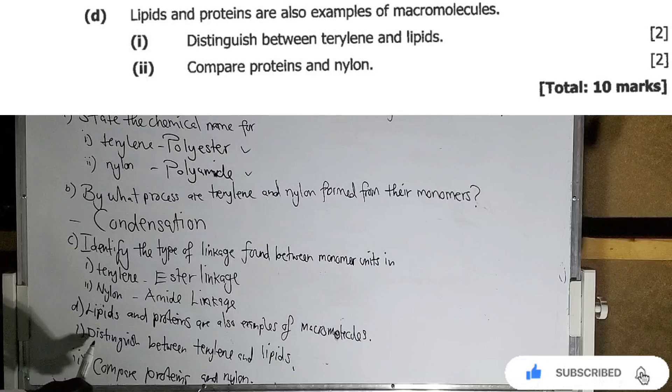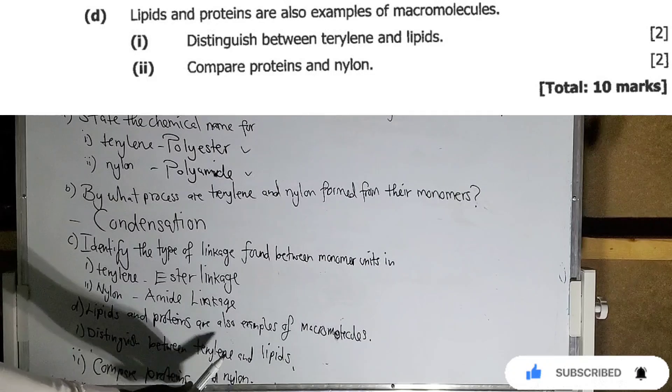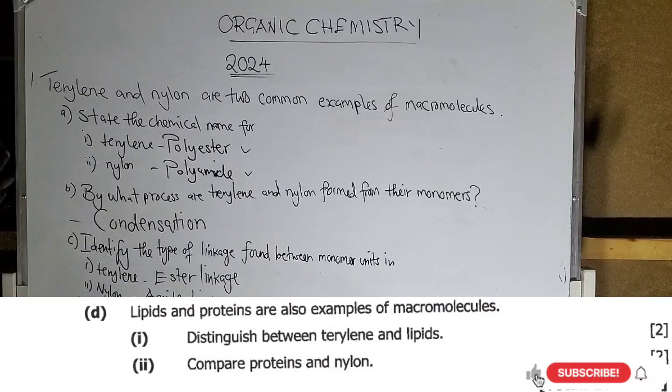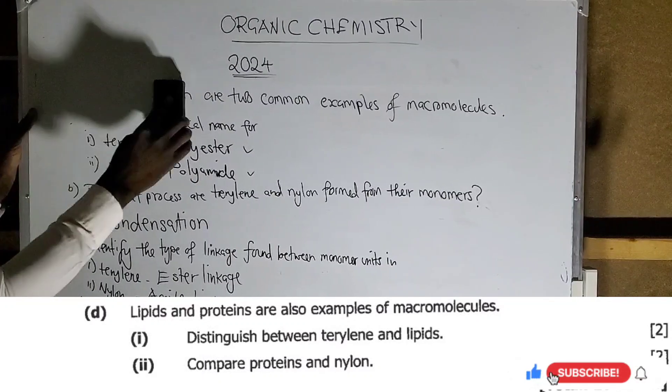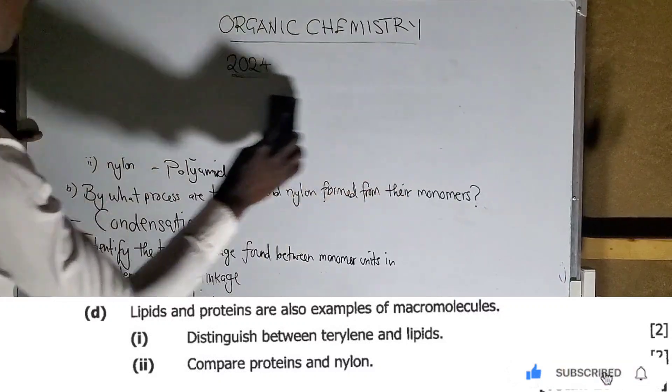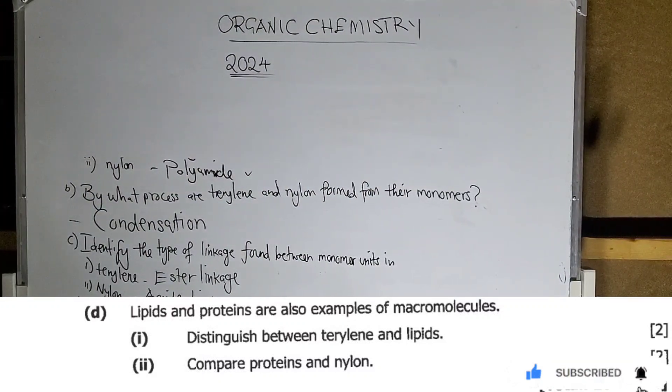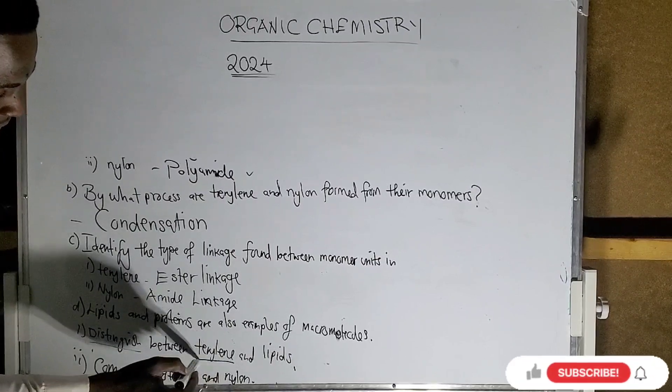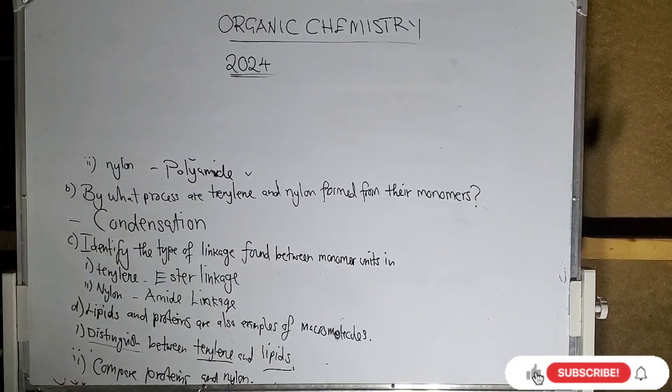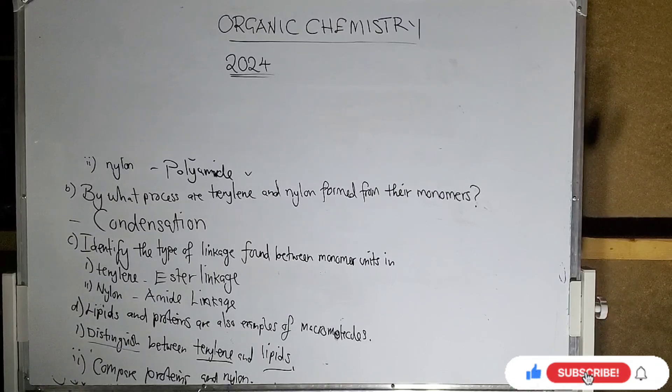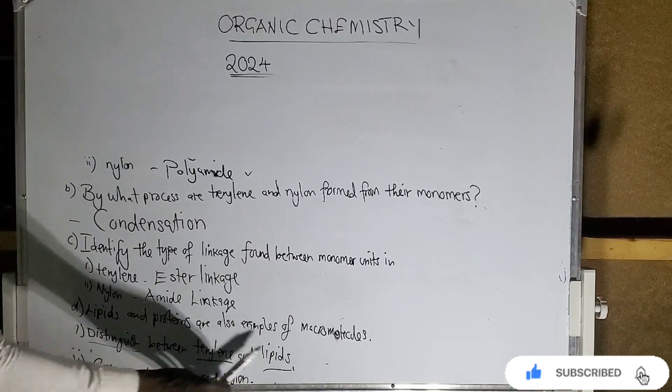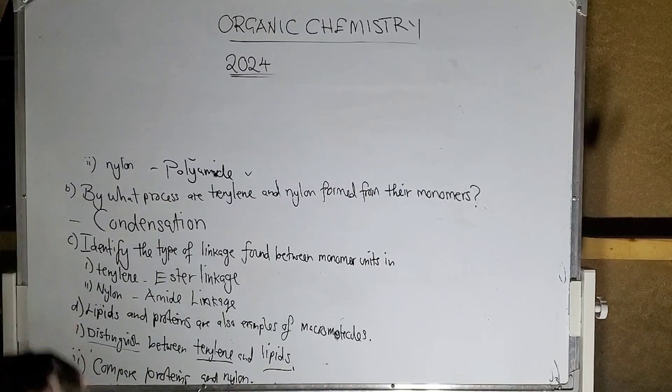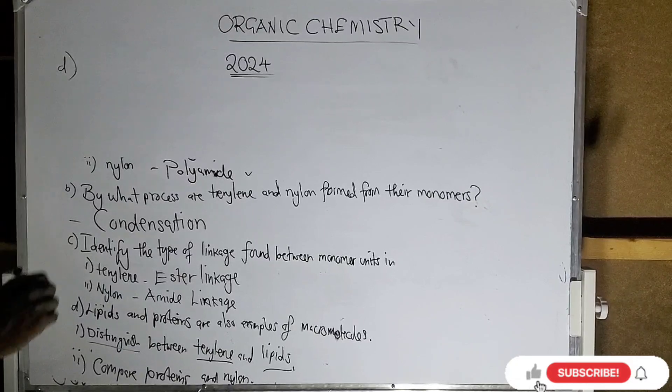Now, the first question is saying distinguish between terylene and lipids. Let me just erase this and explain. I want to explain something here so that you understand. Take note of this. Before we distinguish, let's know that terylene and lipids, they have the same linkage. They all have the ester linkage. So they are similar in terms of linkage, but they are different when it comes to polymerization.